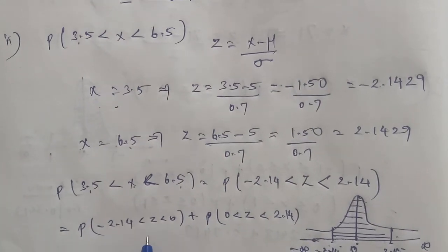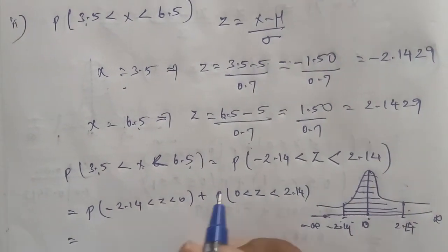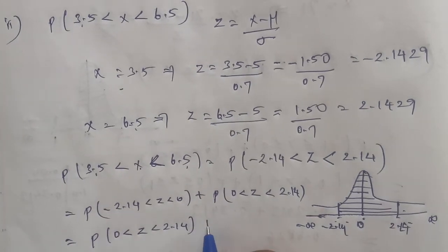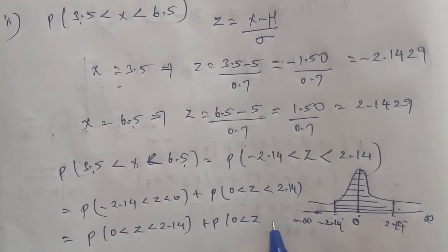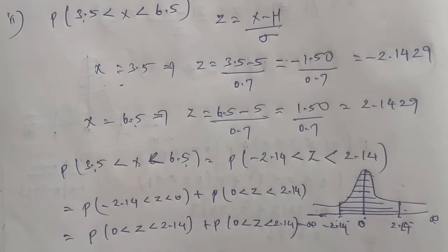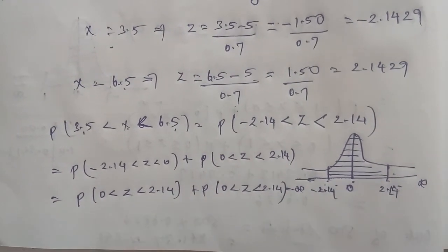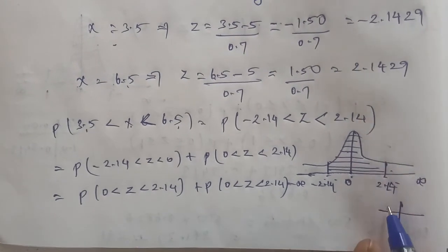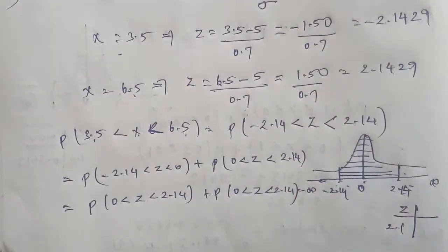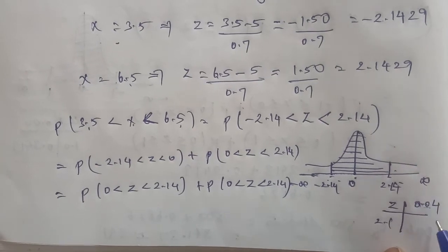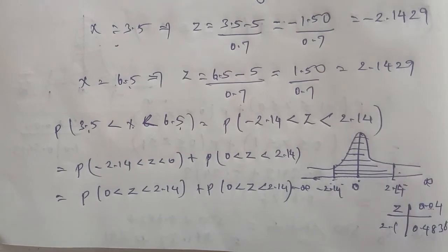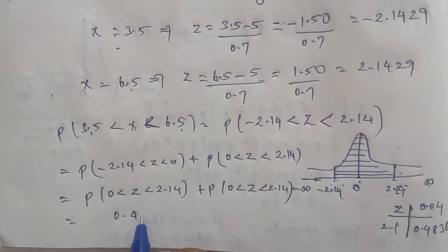If we look at the negative value in reverse, we get P(0 < Z < 2.14) plus P(0 < Z < 2.14). Using symmetry, we add 2 times the value. From the Z-table, for Z = 2.14, we get 0.4838. So we have 0.4838 plus 0.4838.